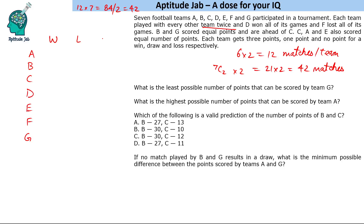For D, we know D has 12 wins and no losses, so its points will be 36 points. Similarly, for F, F lost all its matches — there are 12 losses and no draws — so it has 0 points.